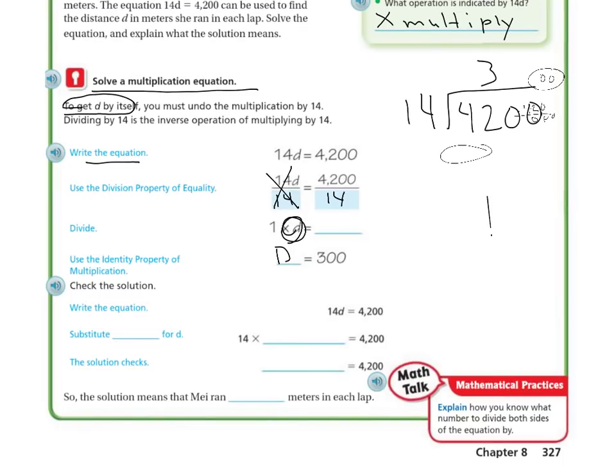To check our answer, we're going to substitute 300 for the D. So then that means we have 14 times 300. Four and 0, 0, 0, we've got 12. Do my space saver.